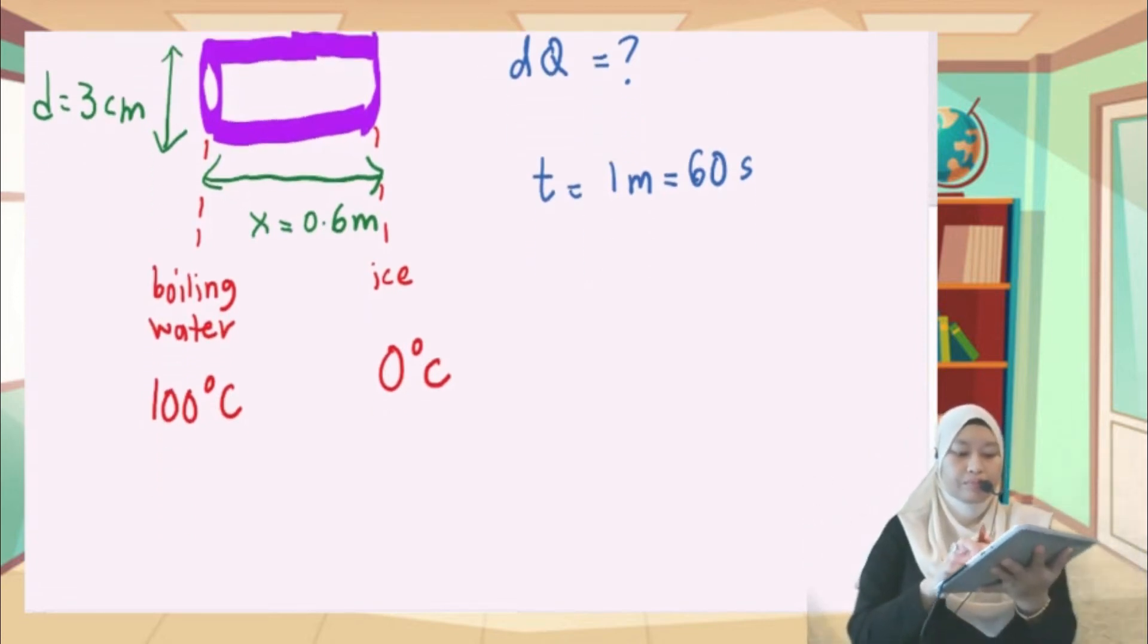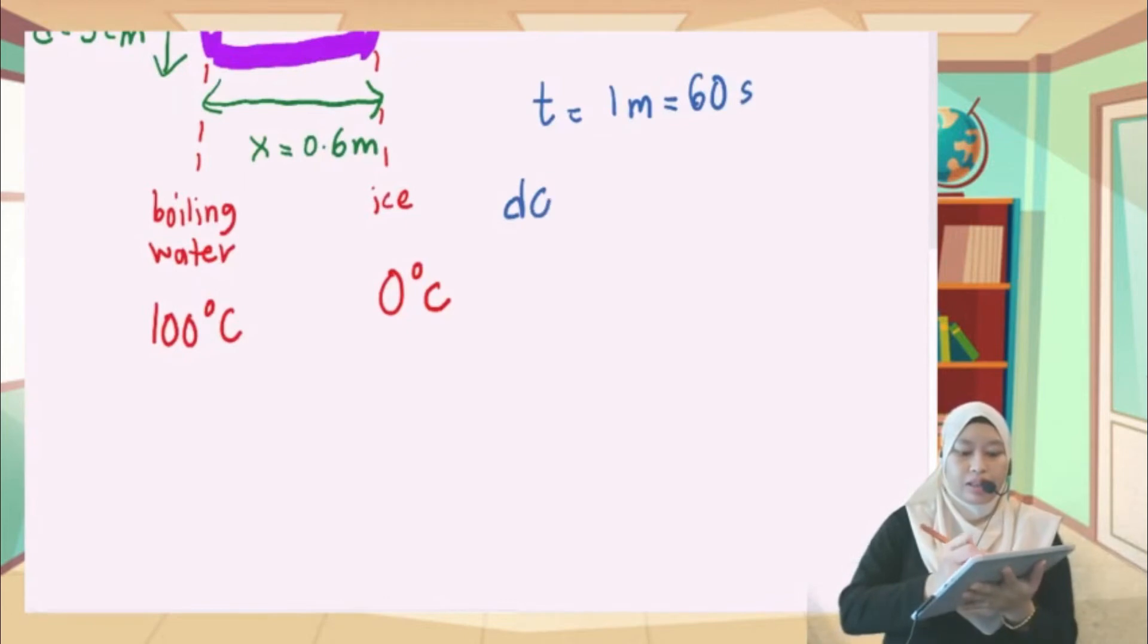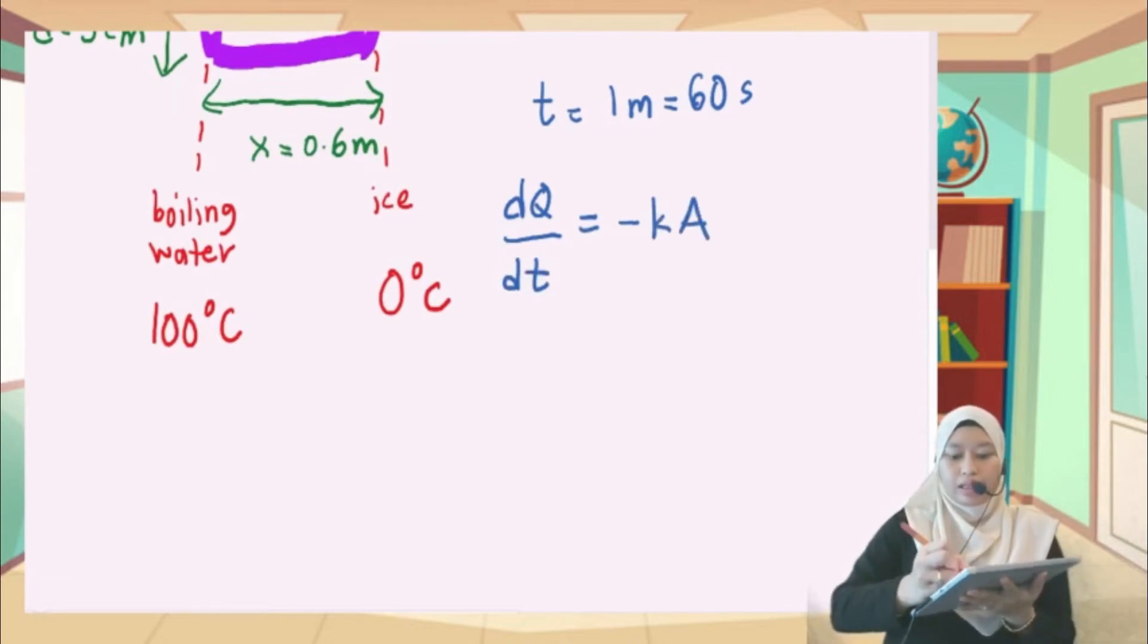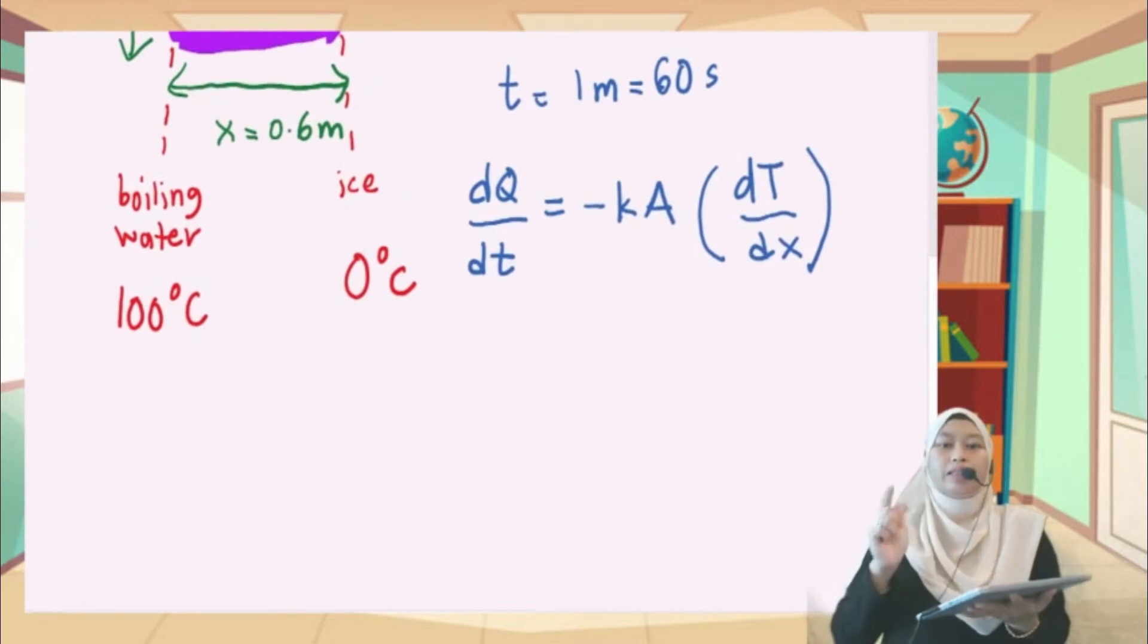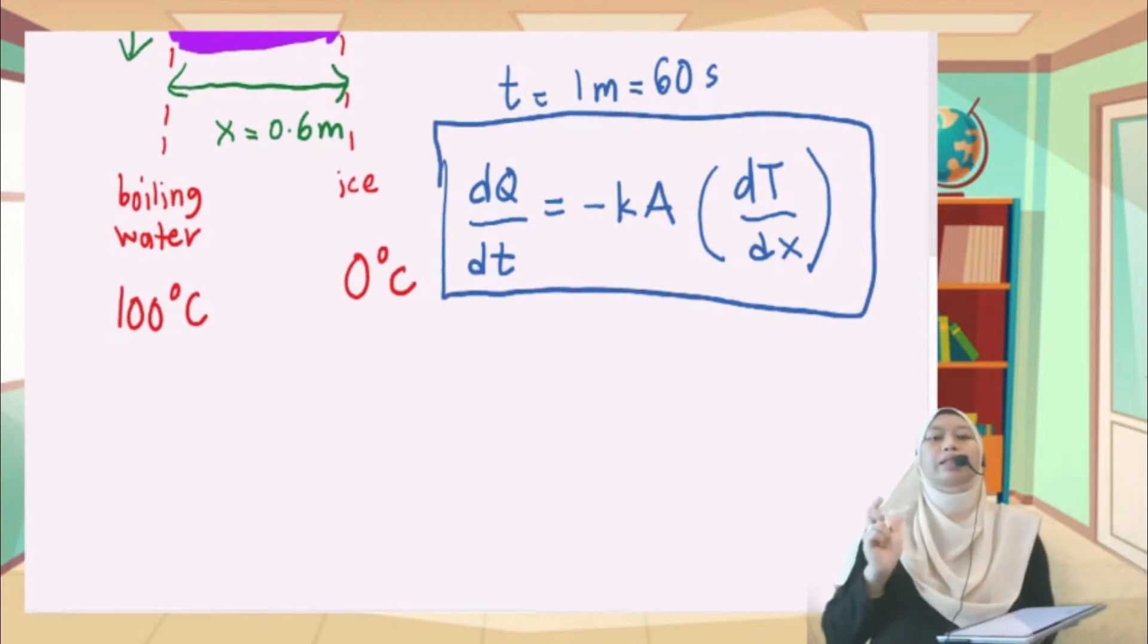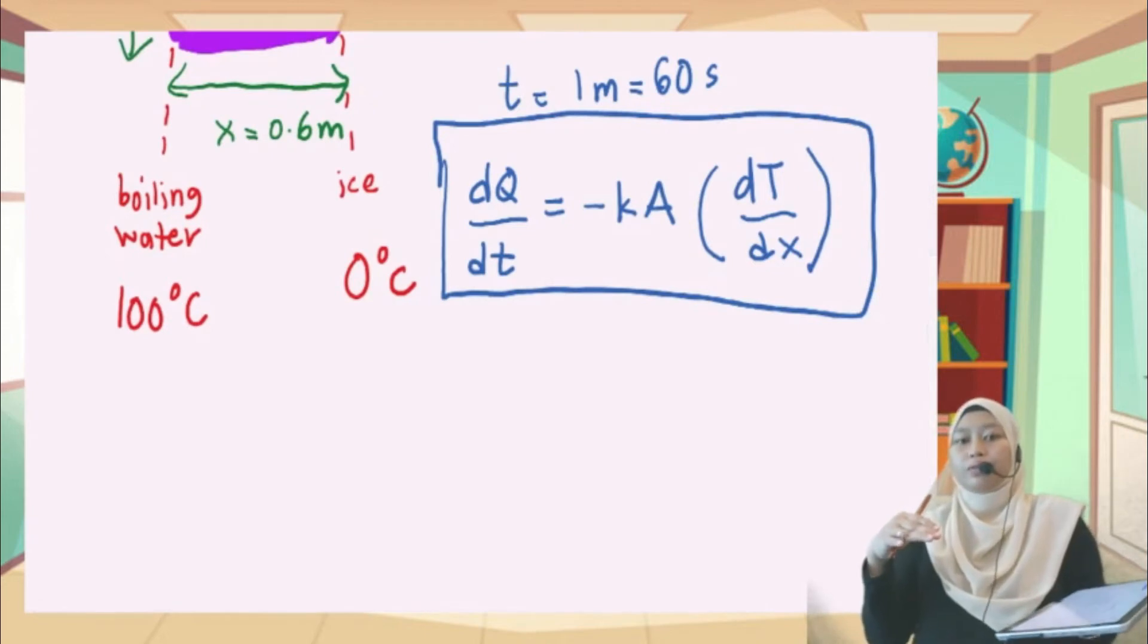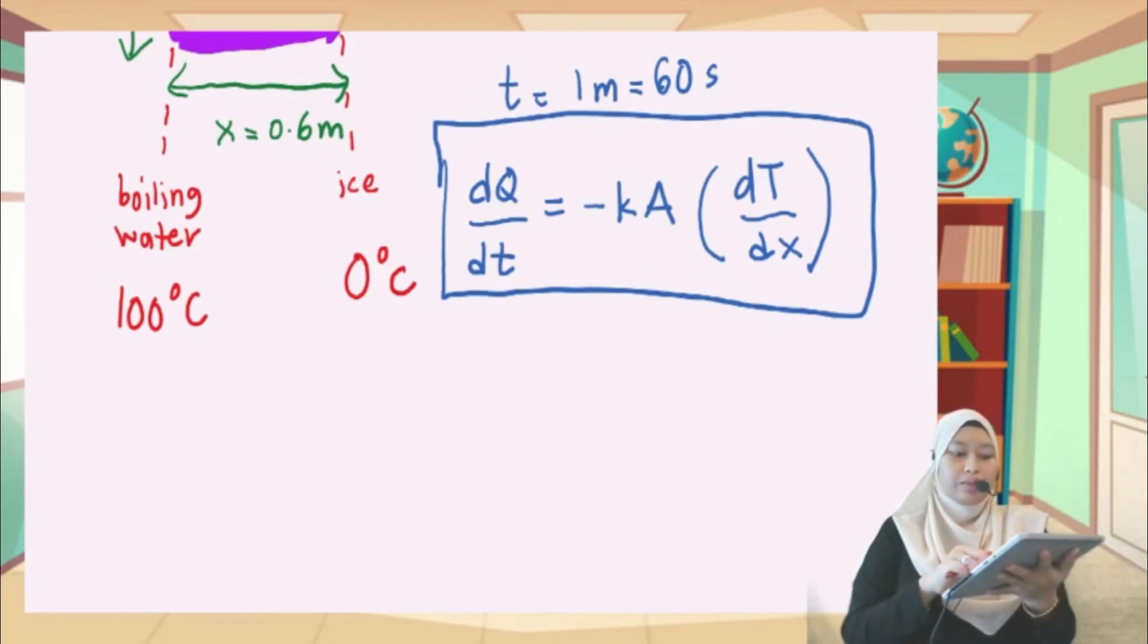DQ over DT equals negative K A dT over dx. This is the equation that we use for class. Remember this. Basically this equation is already in the selected formula in front of your tutorial book, so in case you don't remember, you can always refer to that.